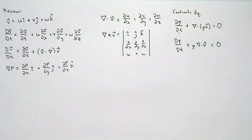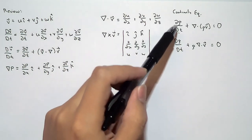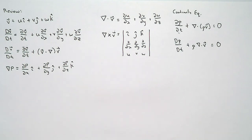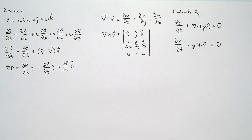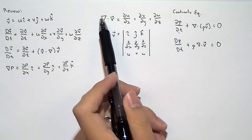If the fluid is incompressible, then the density should not change with respect to pressure, and if there's no varying temperature field, the density wouldn't change with respect to time. So we have two conditions: if the fluid is incompressible — say water — then dρ/dt equals zero. If the flow is incompressible, then del dot V equals zero. Both of them satisfy dρ/dt equals zero or del dot V equals zero.